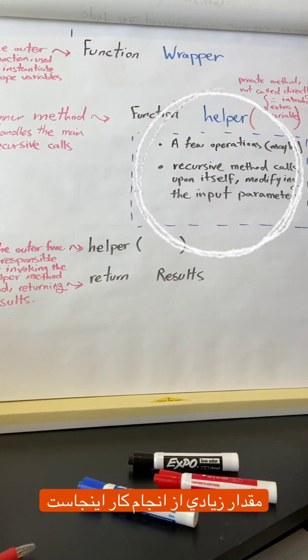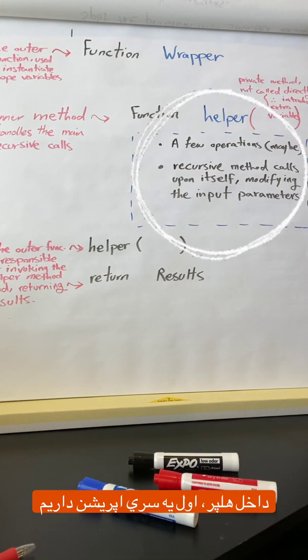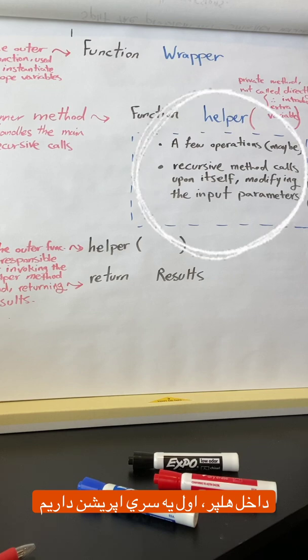So that's basically where a chunk of the operation happens. Inside the helper function or the helper method, we first have a few operations that probably could happen.